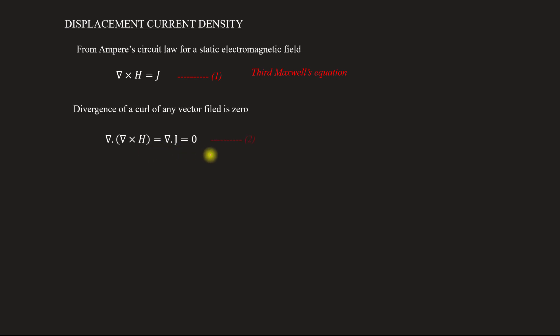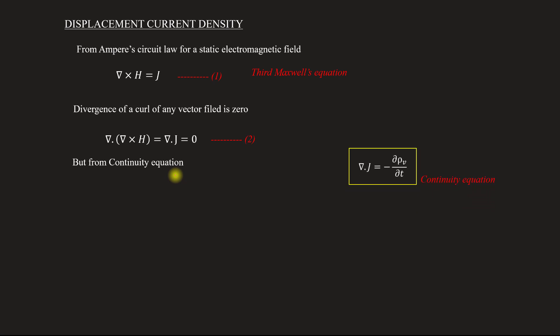Let it be equation number 2. This is what we call the continuity equation. The continuity equation states: del dot J is equal to minus ∂ρv/∂t.